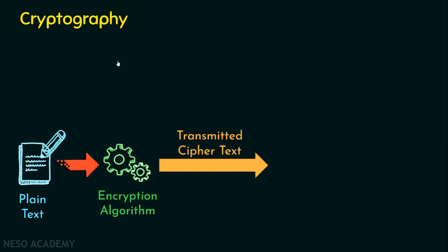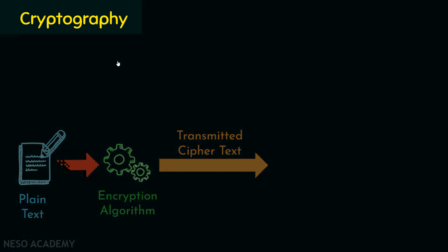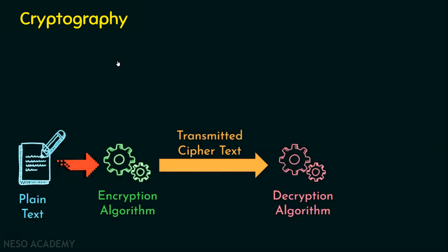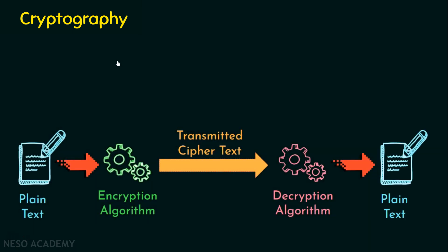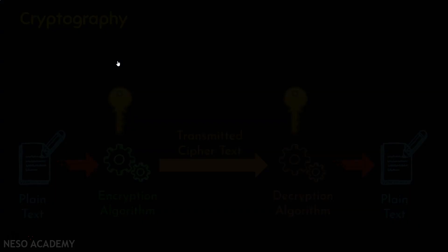No one can understand the ciphertext except the sender and the receiver, so it can be sent on the internet. When the receiver receives the ciphertext, they give it to the decryption algorithm, which is the reverse of the encryption algorithm. The output of the decryption algorithm will be the plaintext back. In this whole process, keys are used by both the encryption and decryption algorithms, and based on the keys we have two types of cryptography.